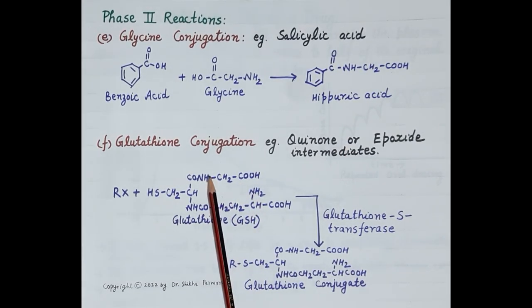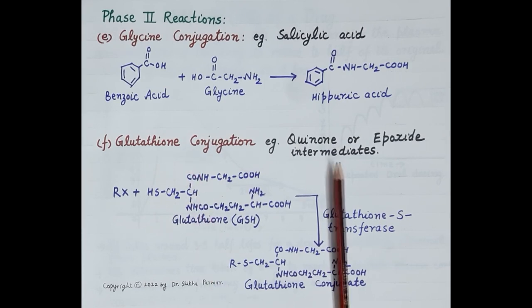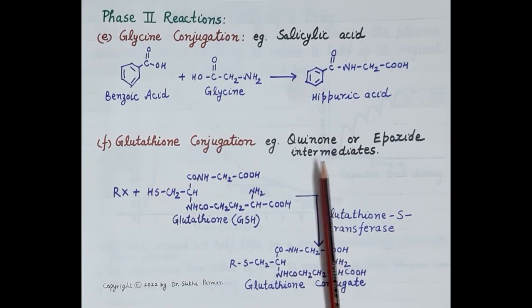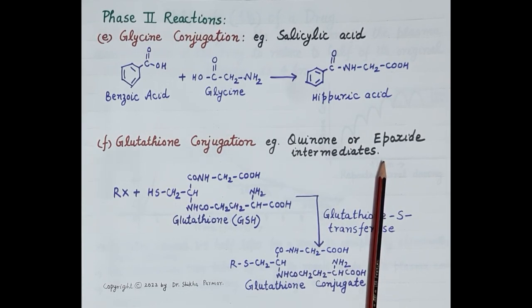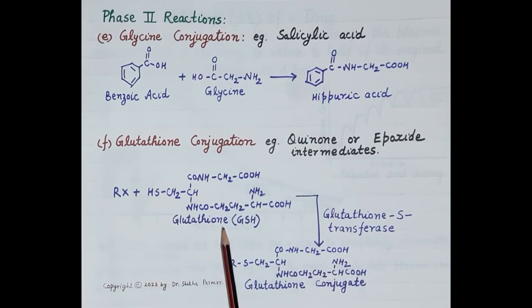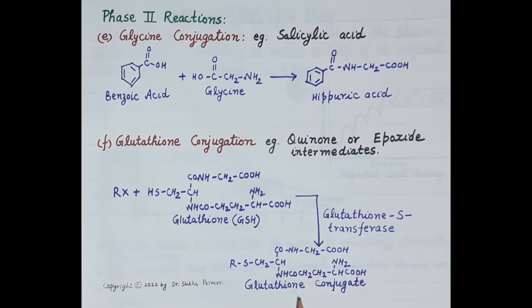The next type of phase 2 reaction is glutathione conjugation. Even though this pathway is a minor pathway of metabolism, it is a very important pathway as it inactivates highly reactive quinone or epoxide intermediates produced during the metabolism of drugs — for example paracetamol. The drug is conjugated to glutathione by the enzyme glutathione S-transferase, present in the liver. Glutathione conjugates are excreted in the feces, or they are converted to mercapturic acid, which is highly water soluble and excreted in the urine.